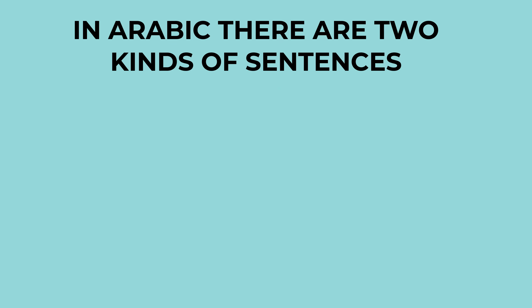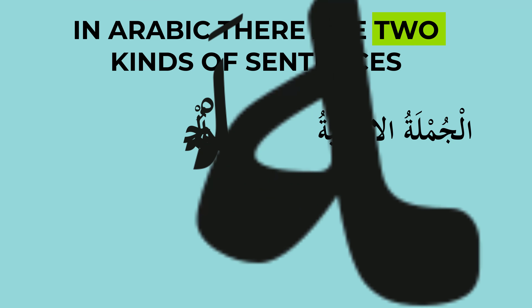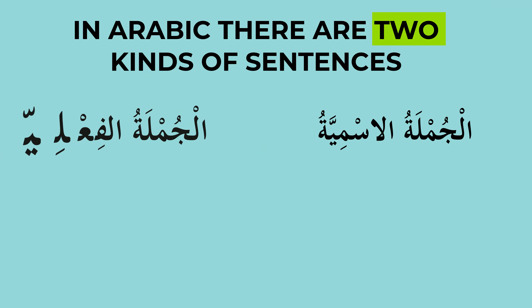Now, in Arabic language there are two kinds of sentences. One is called al-jumlatul ismiyatu, and the other is called al-jumlatul fialiyatu.